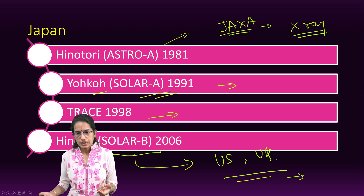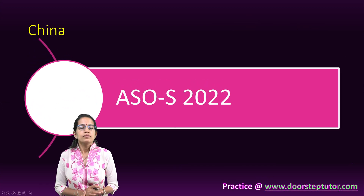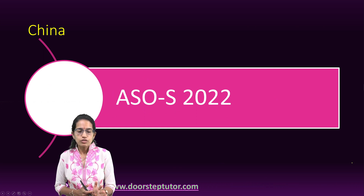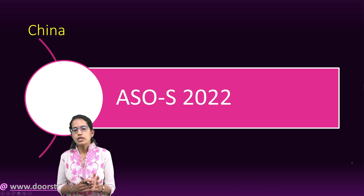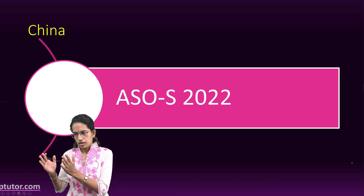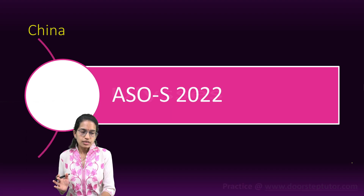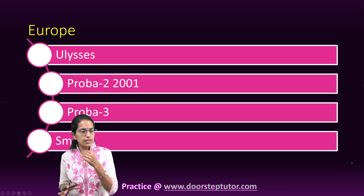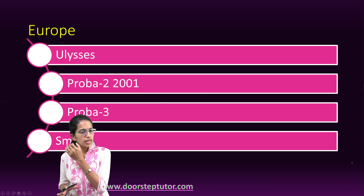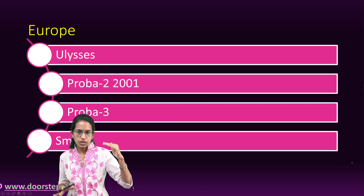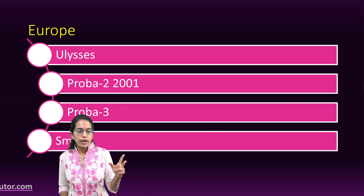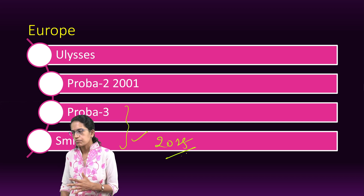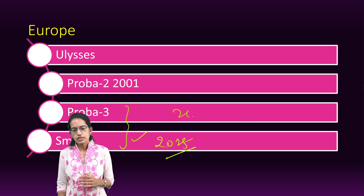China, also in the race, started its first mission as ASOS in 2022 — the Advanced Space-Based Solar Observatory. Europe started with its first project known as Ulysses, then Proba 2 released in 2001, with Proba 3 scheduled for 2024 and SMILE scheduled for 2025.